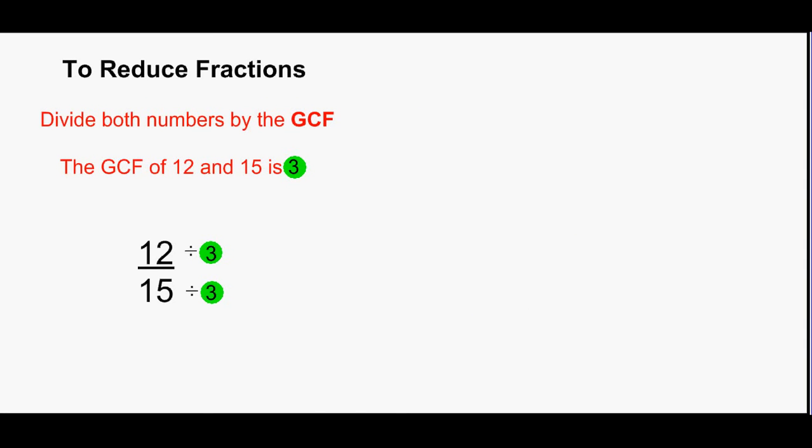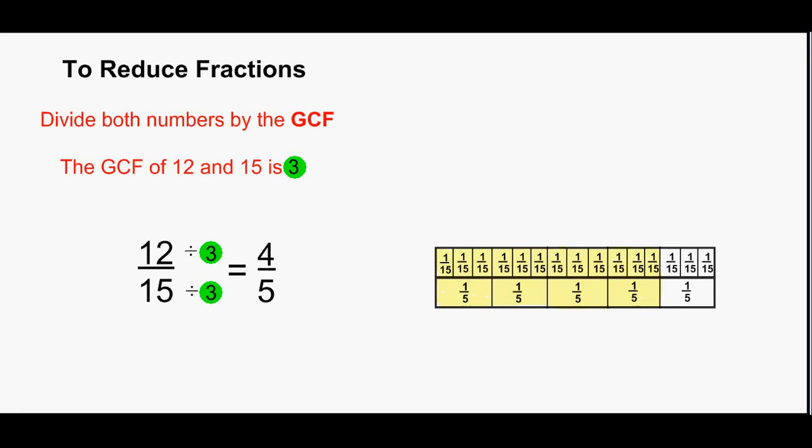Now we can reduce the fraction by dividing both numbers by the GCF 3. 12 divided by 3 equals 4. 15 divided by 3 equals 5. Our fraction written in lowest terms is 4 fifths. I have included a diagram to the right.